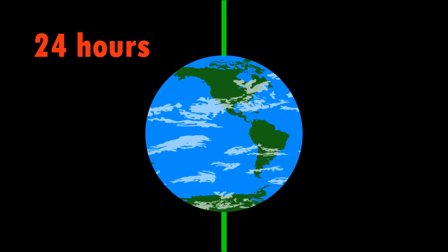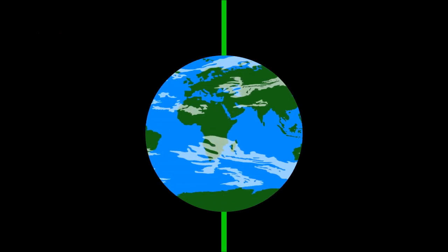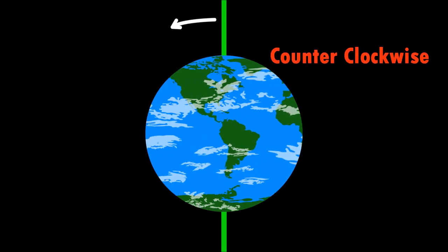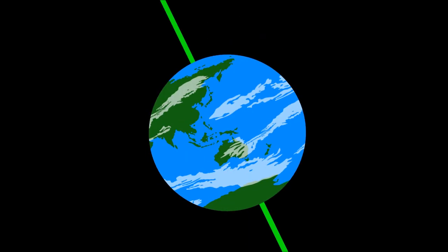It takes about 24 hours for the Earth to rotate on its axis. This rotation is counterclockwise. The Earth's axis is tilted slightly at an angle of approximately 23.5 degrees.